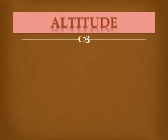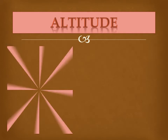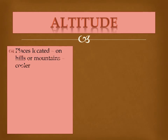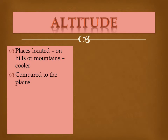Next is altitude. Places located on hills or mountains are cooler than places in the plains. Places on raised, higher areas are cold compared to the plains. Higher elevations have a colder climate.